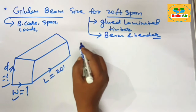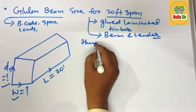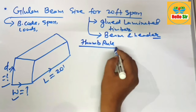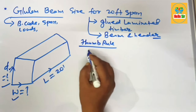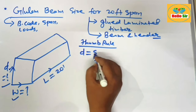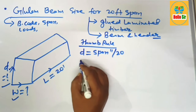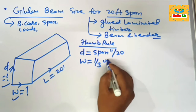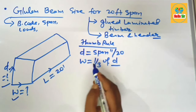Here we calculate the size of the beam according to the thumb rule. The thumb rule to find the correct Glulam beam required for a 20-foot span: the depth of the beam should be your span length in inches divided by 20, and the width section of the beam is one third of the depth section. This is the thumb rule.